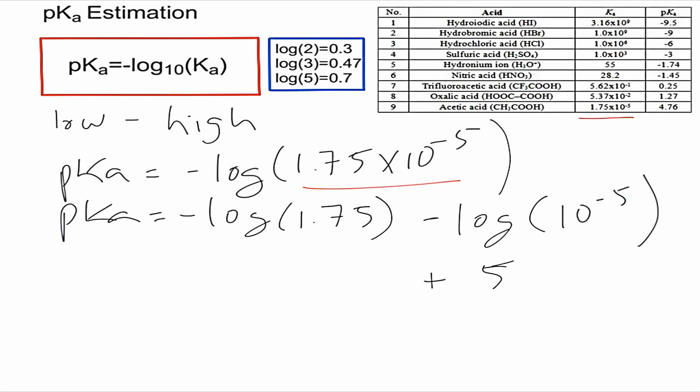We know that this right here is equal to 5, so we have plus 5 here. The negative sign in here cancels the negative sign here, making it positive. Then we're left with the negative log of 1.75. 1.75 is very close to the log of 2, so we can approximate that and say that this can be negative 0.3.